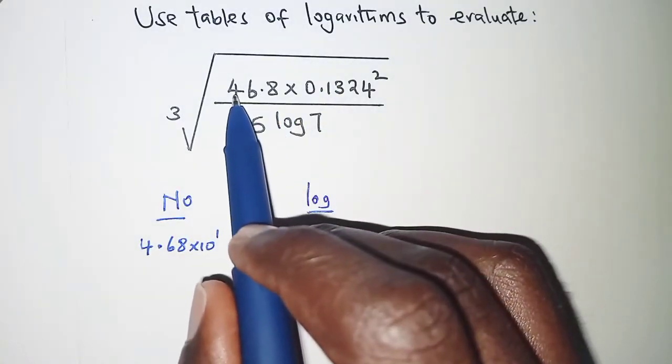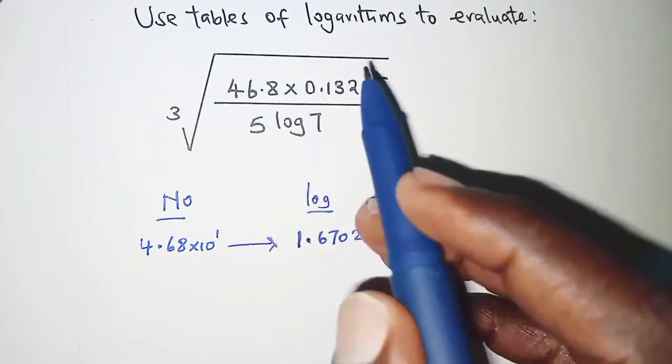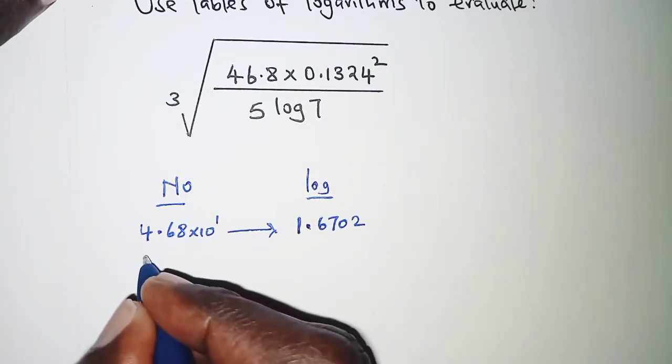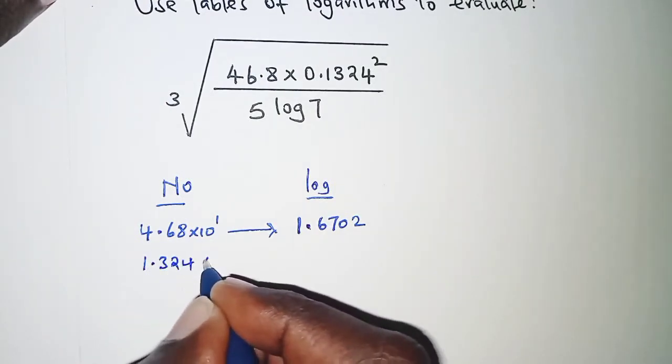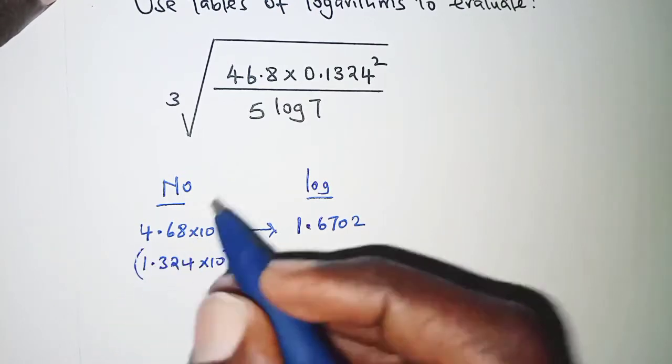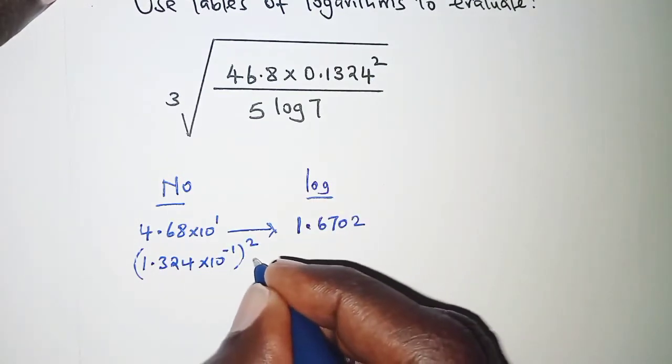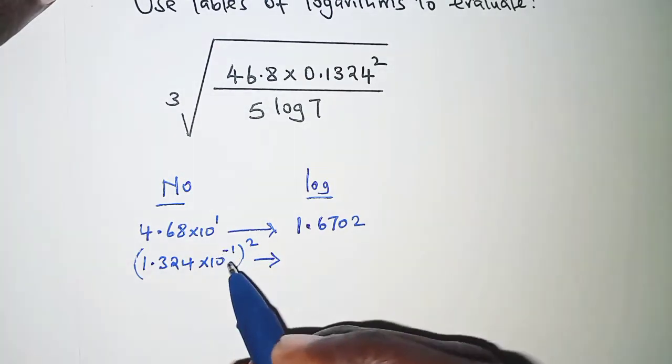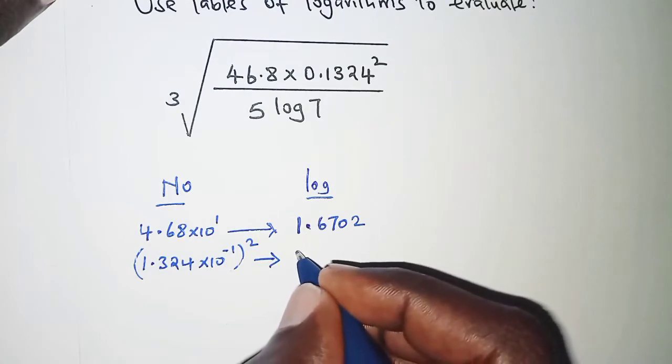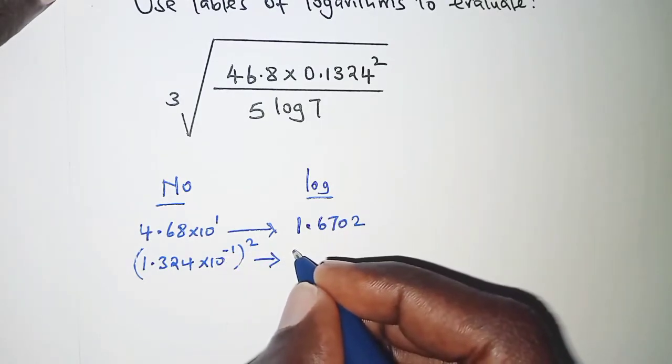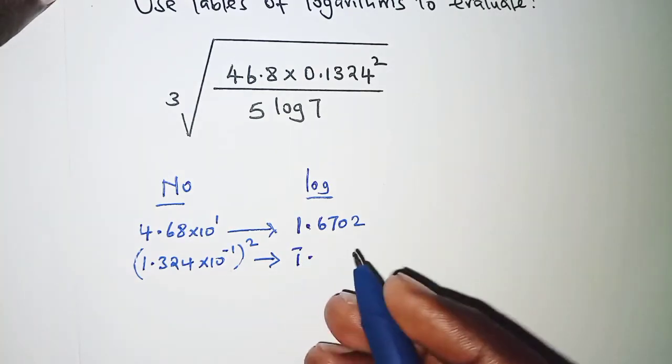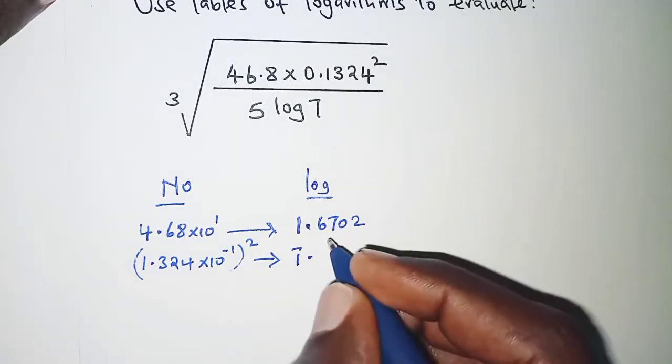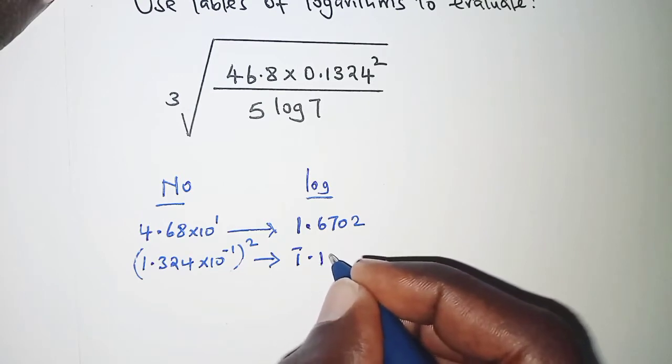We have already obtained logarithm of 46.8. Next we get logarithm of 0.1324 squared. We write that in standard form: 1.324 times 10 power negative 1, but remember it is squared. We read the logarithm of whatever we have inside the brackets. We have negative 1, written as bar 1, and then after the decimal point we get the logarithm of 1.324, which from my mathematical table is 1219.